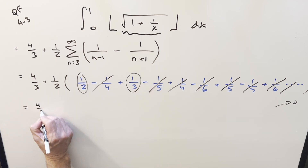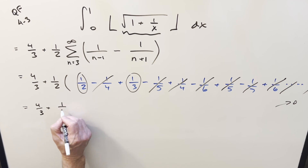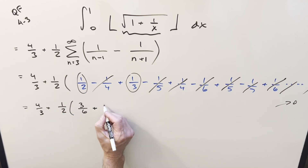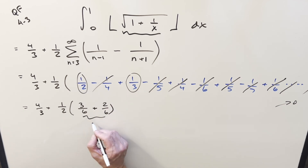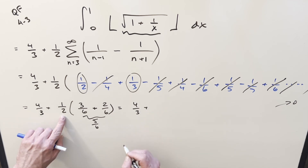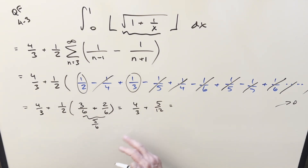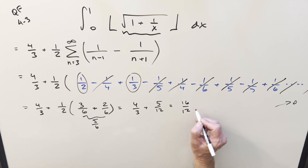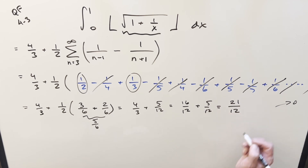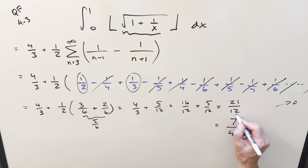Putting it all together: we have 4 thirds plus 5 over 12. Getting a common denominator of 12 gives 16 over 12 plus 5 over 12, which adds to 21 over 12. Reducing the fraction, the final solution is 7 over 4.